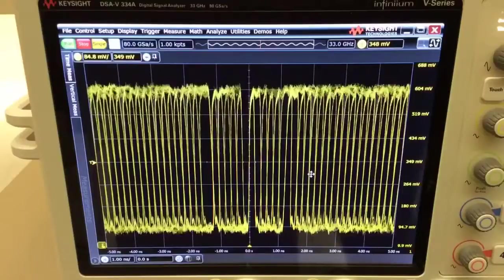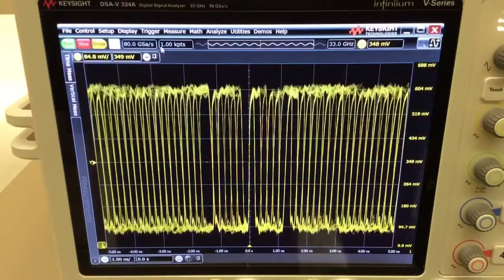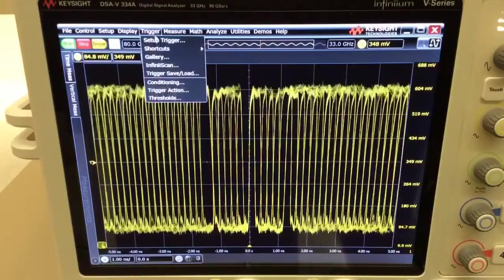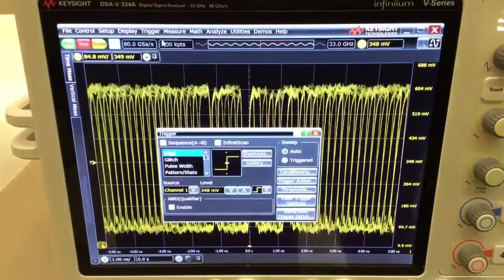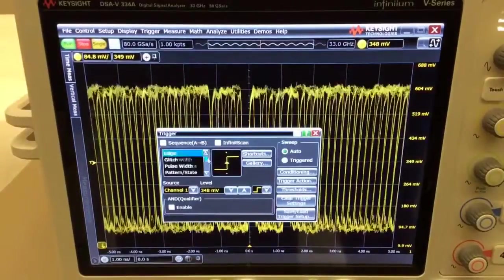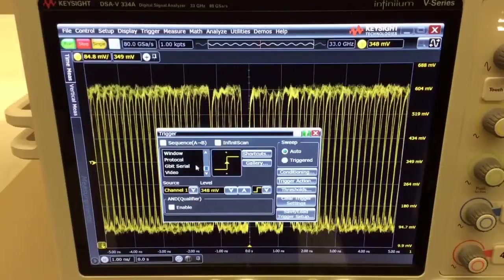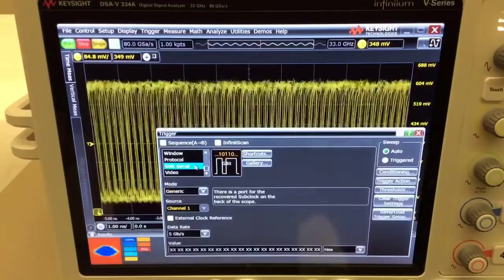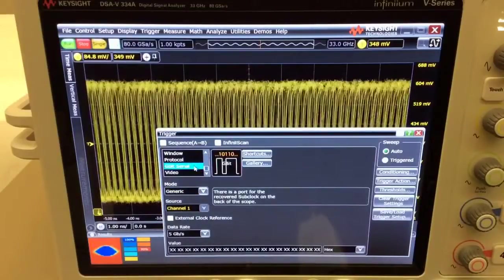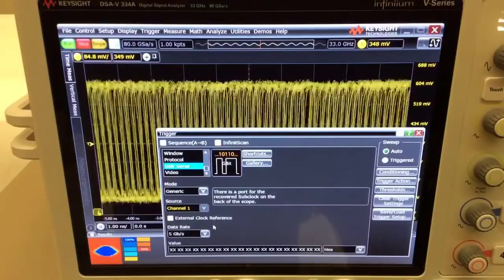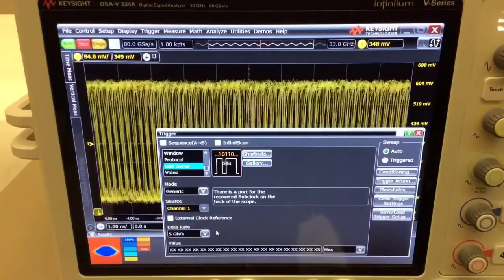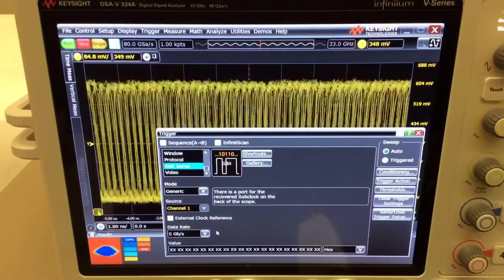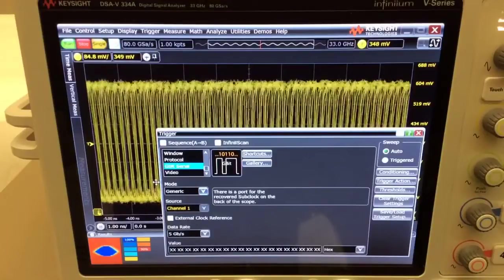In order to access the hardware serial trigger, you first go to the trigger menu in the scope, select setup trigger, and scroll down the list until you find the gigabit zero. Select that and the next step is to configure the data rate. It has already been configured to 5 Gbps which is what the signal is transmitting right now.